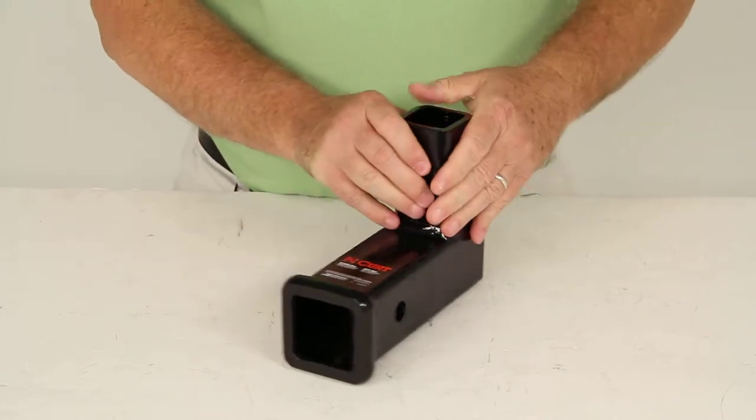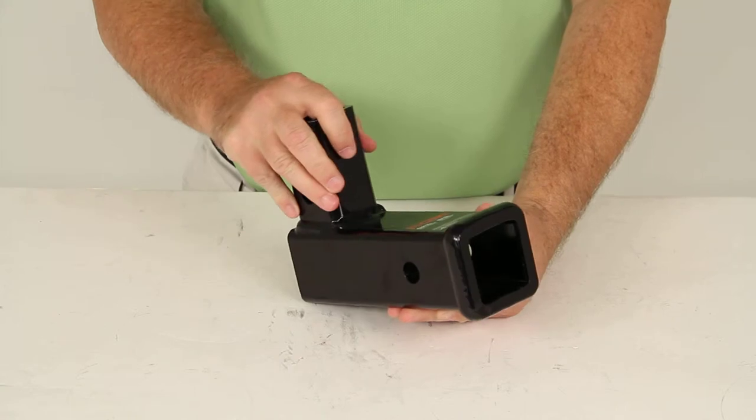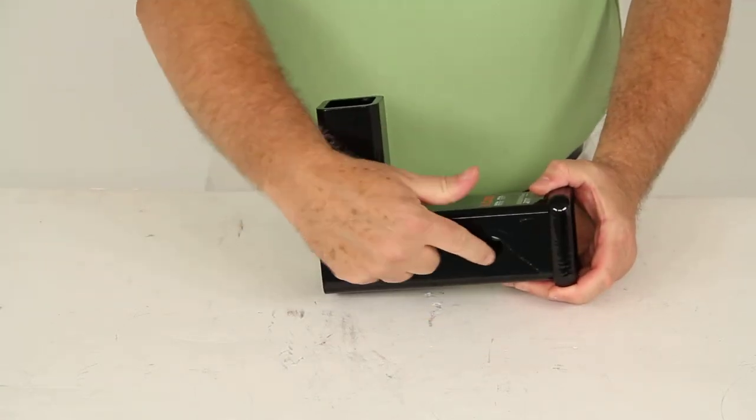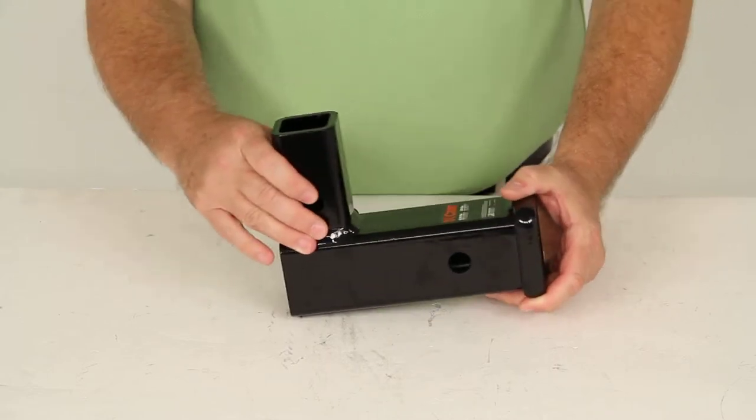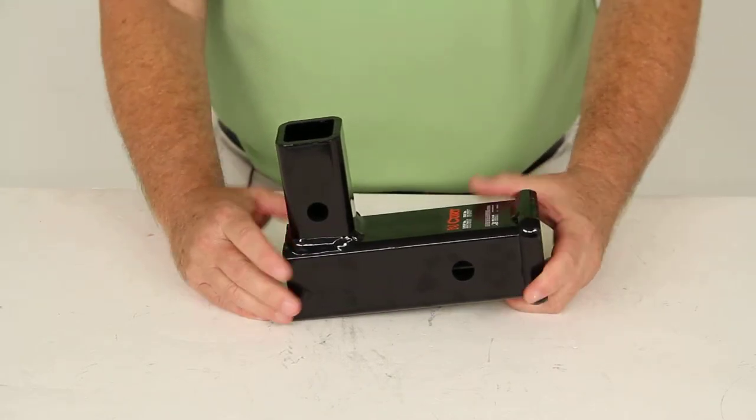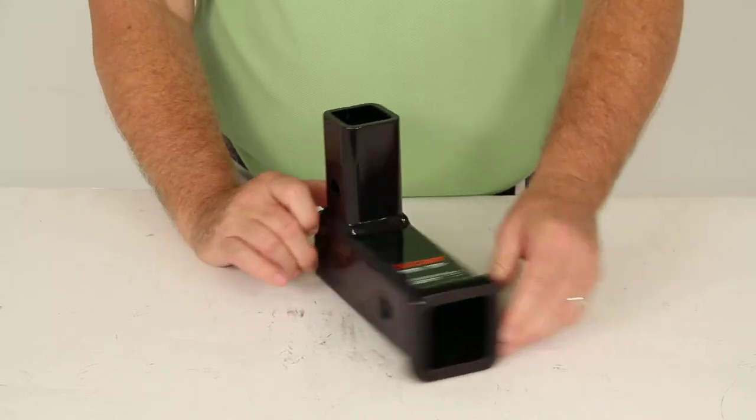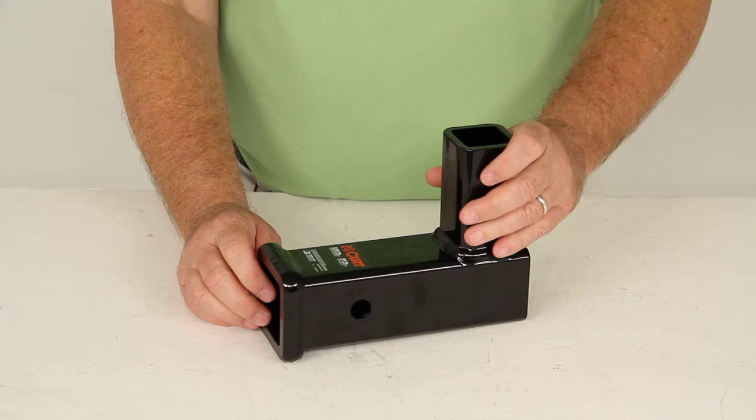This is specially designed for use with CURT stealth hitches only. Due to these pin hole locations, sometimes it will not match up to certain other stealth hitches. So you would need to check the measurements on the product page for this part number to see if it would work on your application.